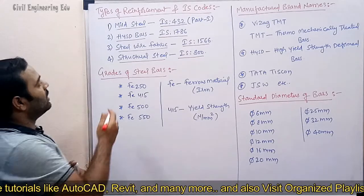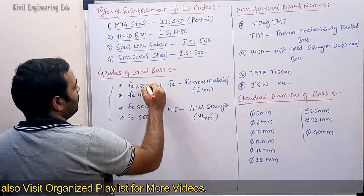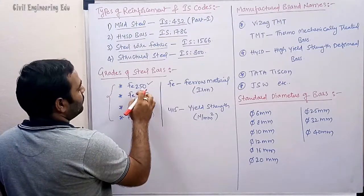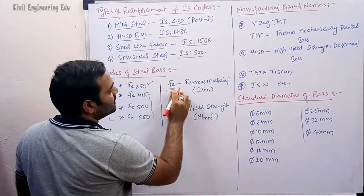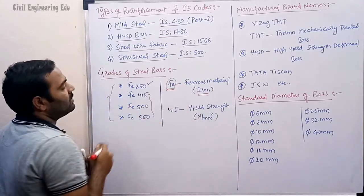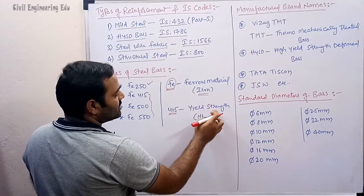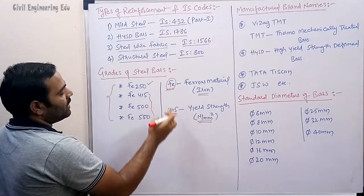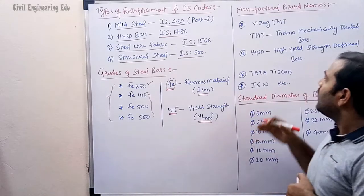The general grades of steel bars are: Fe 250 (mild steel), Fe 415, Fe 500, and Fe 550 (HYSD bars). Here 'Fe' is the abbreviation for ferrous material, meaning iron. The number — for example, 415 — represents the yield strength measured in Newton per mm².